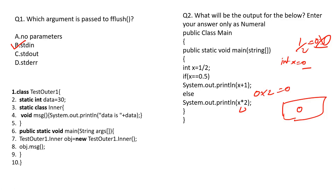The next question is also output-based. Execution starts from the main function. We take an object of the inner class that is present in the TestOuter class. This object calls the function message. The data variable has been provided in the parent class itself, so the output of this one is going to be 'data is 30'.